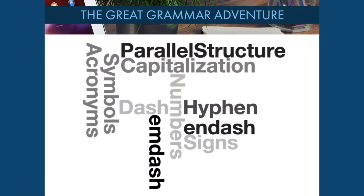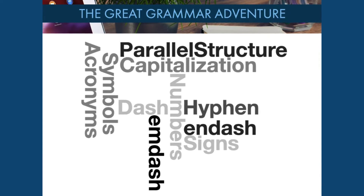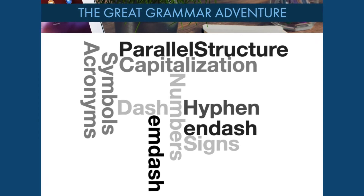There are many things to think about in academic writing: subject-verb agreement, parallel structure, capitalization, punctuation, how to use dashes, how to use numbers, how to use symbols, and acronyms. There are additional things to think about as well.